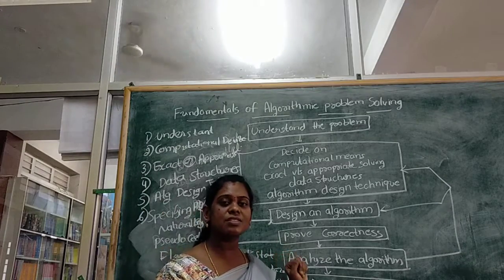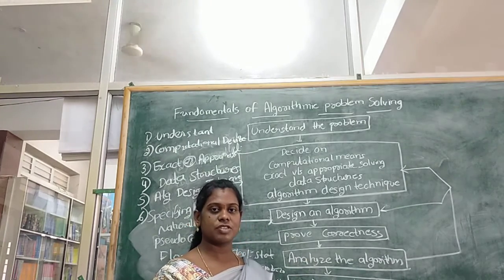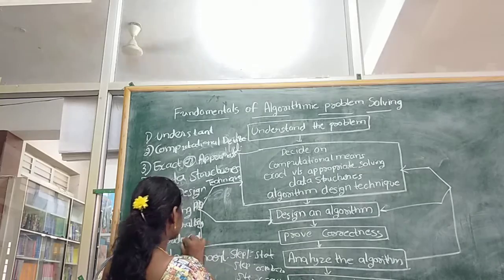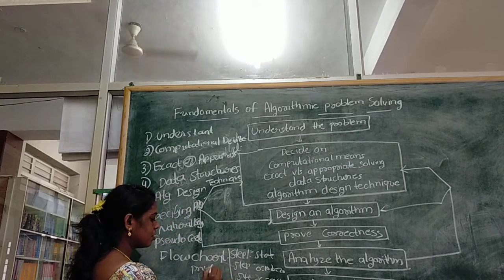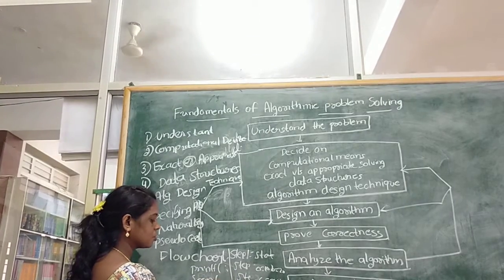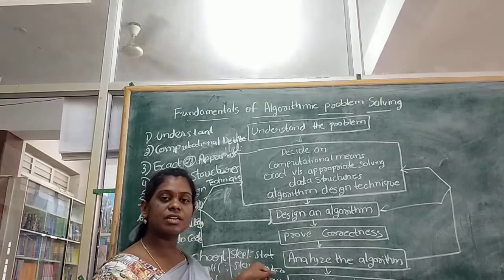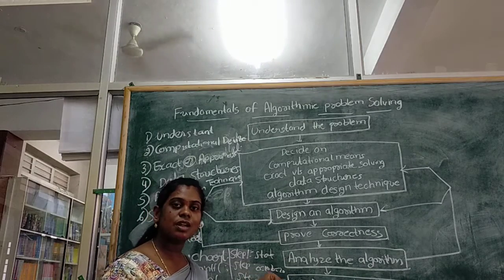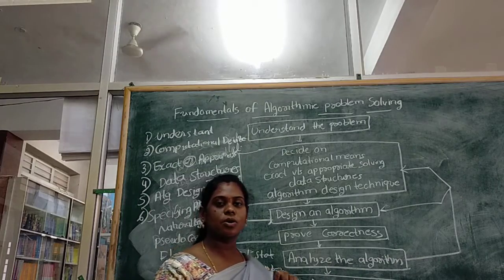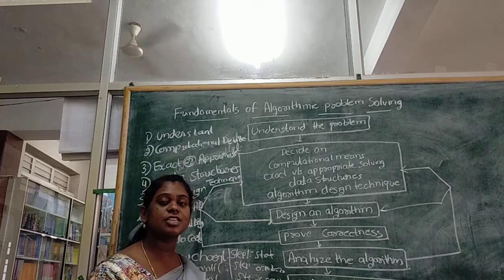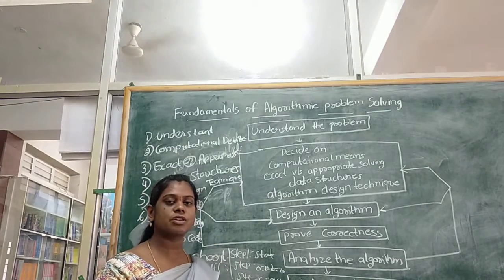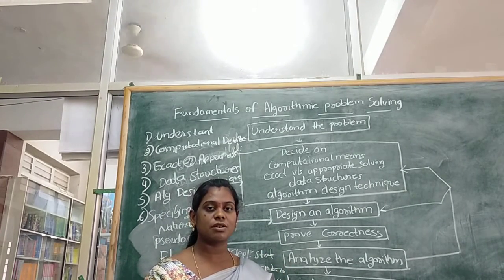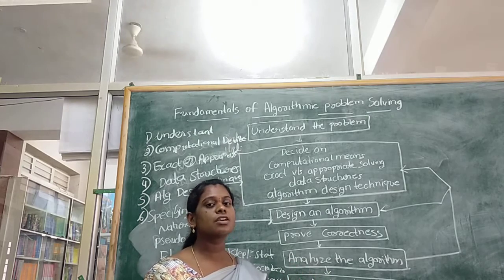Pseudocode is a combination of natural language and programming language. Flowchart means the diagrammatic — or pictorial — representation of the algorithm. So there are three ways of specifying an algorithm: natural language, pseudocode, and flowchart.